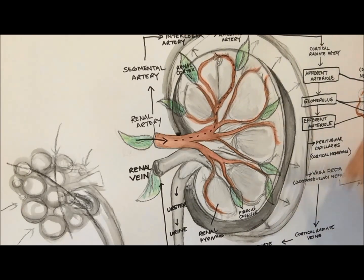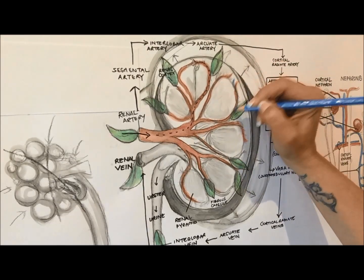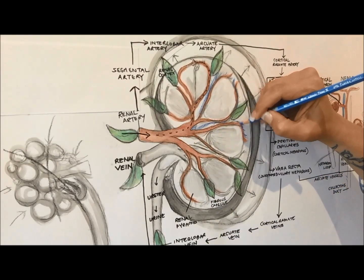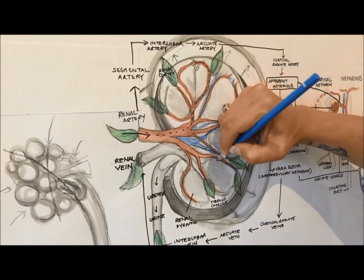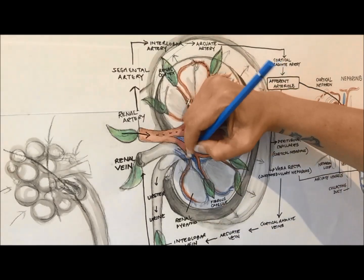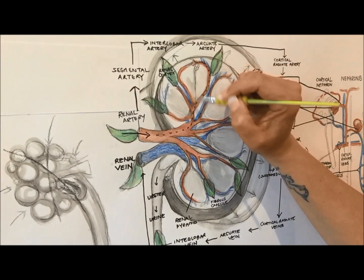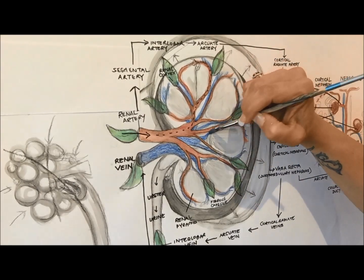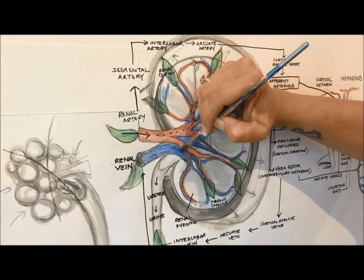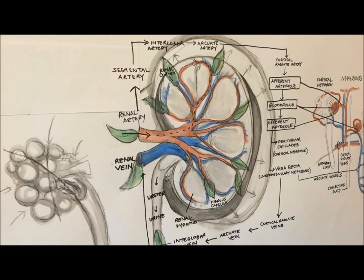When looking at deoxygenated blood flowing out of the kidney, veins trace the pathway of the renal blood supply, but in reverse. An efferent arteriole carries blood out of the glomerulus and flows into more capillaries, known as the peritubular capillaries in cortical nephrons, and the vasa recta in juxtamedullary nephrons, which both surround tubular parts of the nephron. Blood leaving the peritubular capillaries, where it is deoxygenated, drains into the cortical radiate veins, which also receive blood from the vasa recta. It then flows sequentially into the arcuate veins, into lobar veins — there are no segmental veins — and finally the renal vein, which then empties into the inferior vena cava.